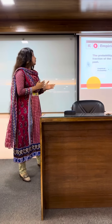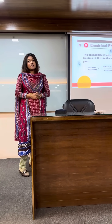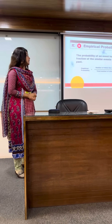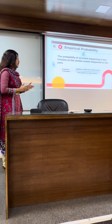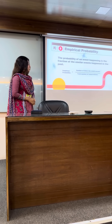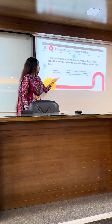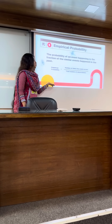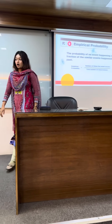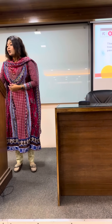What is empirical probability? The probability of an event happening is the fraction of the similar events happened in the past. And here we can see the formula: empirical probability is equal to number of times the event occurs divided by total number of observations.